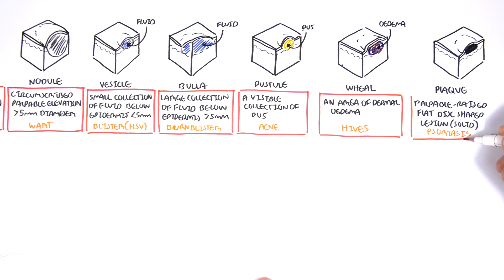A lesion can also contain fluid within the dermis layer, not the epidermis, but the dermis. And this is known as a wheal. So a wheal is an area of dermal edema. An example of this wheal condition is known as hives, which is an allergic reaction.